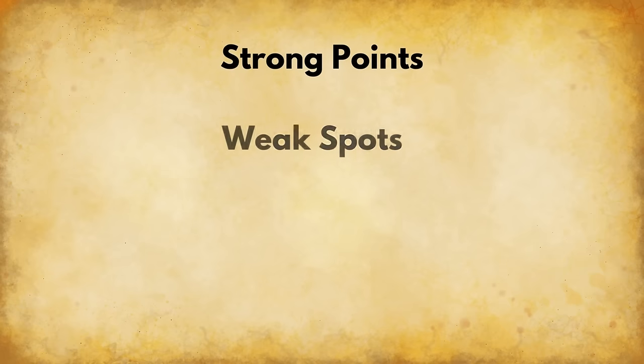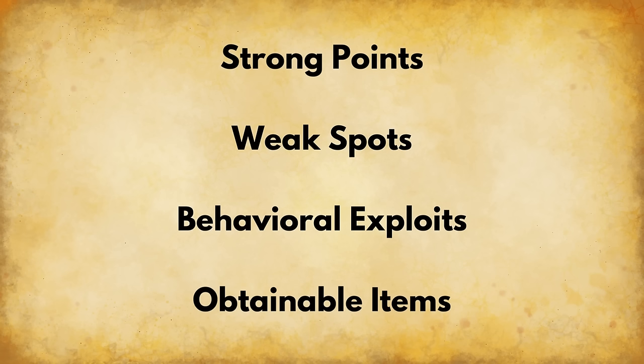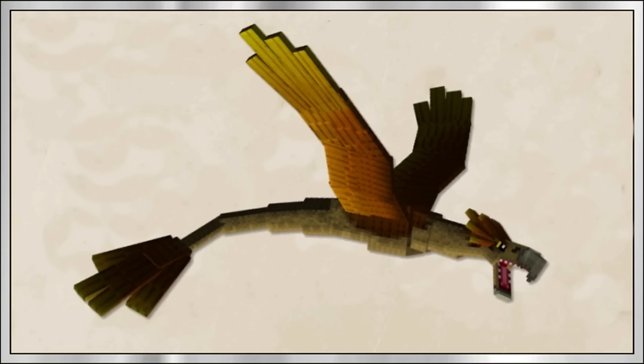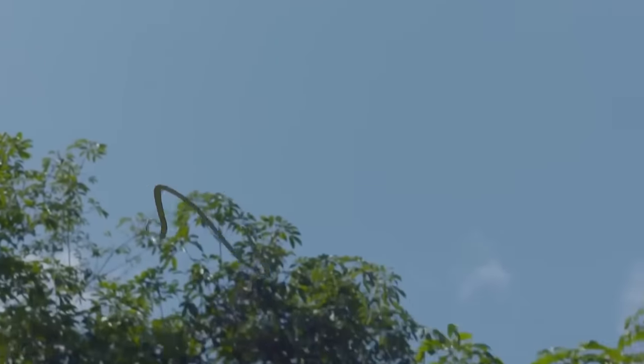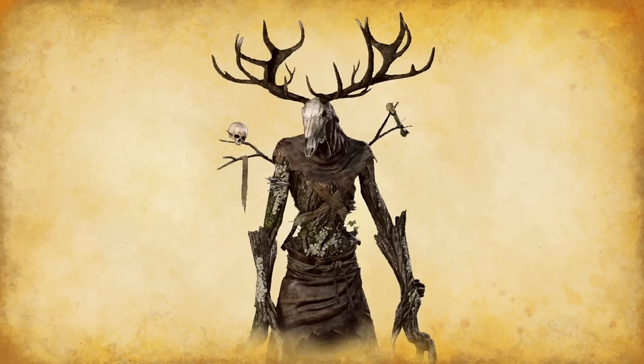Moving on to biology — this is going to be a wild ride. When adding biology, it's best to think of it like in-game mechanics: strong points, weak spots, behavioral exploits, obtainable items. This makes your creature easy to scale with characters, helps plot out progression, and lets you connect them to a culture or religion. I incorporated an amphithere body plan and how flying snakes flatten their rib cages into how my creature traverses the forest.